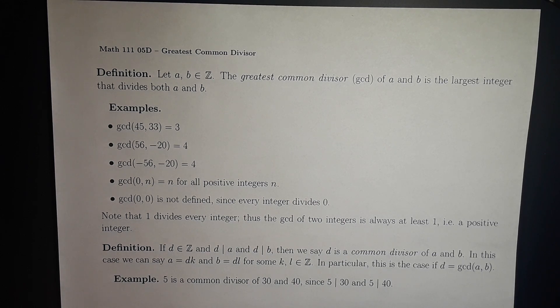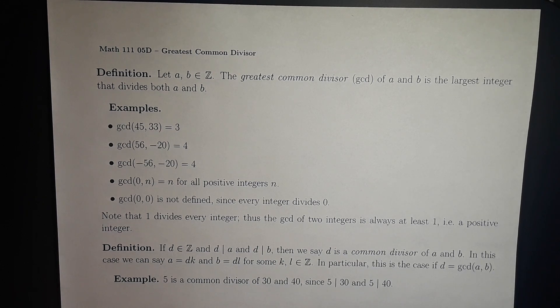In particular, this is the case when d is the GCD of a and b. For example, 5 is a common divisor of 30 and 40, since 5 divides 30 and 5 divides 40.